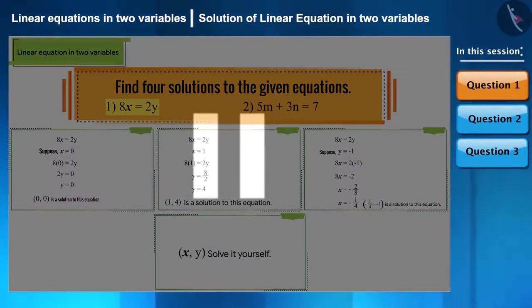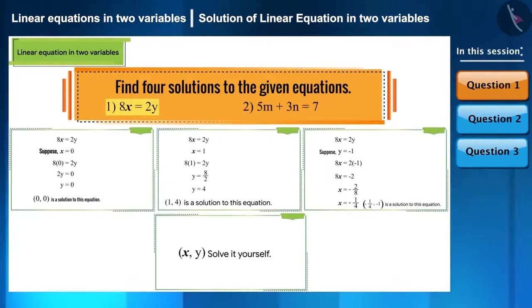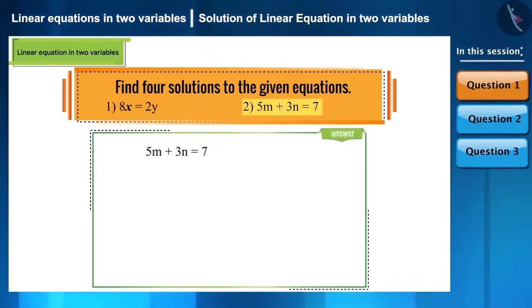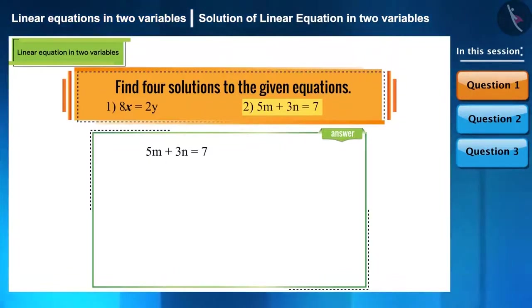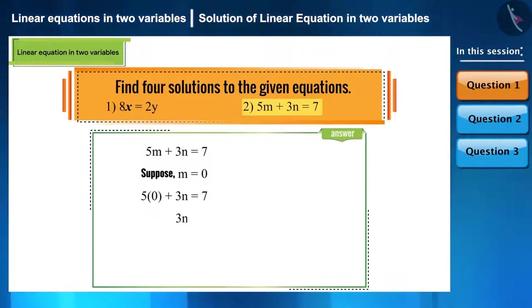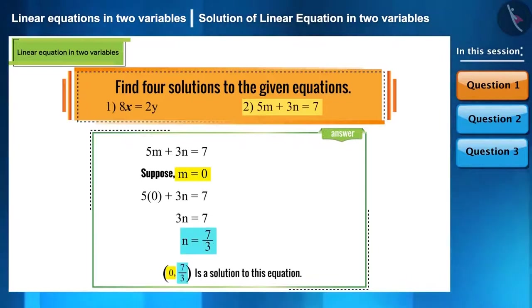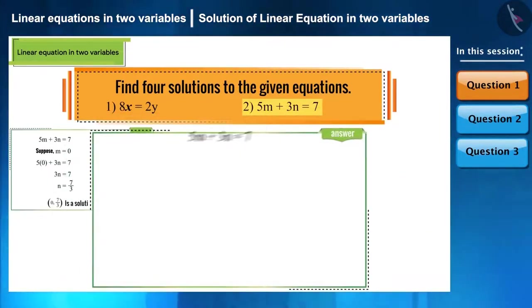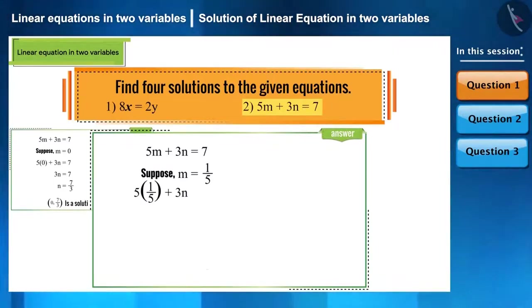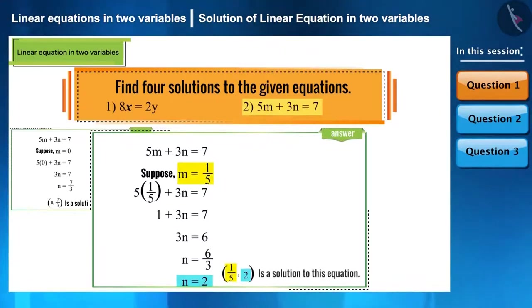Now let's take the second equation and find its solutions: 5m plus 3n is equal to 7. Substituting m as 0, we get n as 7 by 3, hence (0, 7/3) is the first solution. Now keeping m as 1 by 5 and solving the equation, we obtain n as 2, which is the second solution.